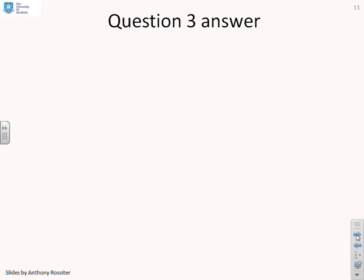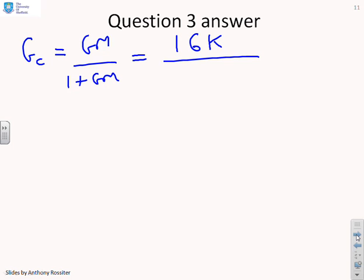First then, let's write down what the closed loop transfer function is. So gc, which will be gm over 1 plus gm, can be rearranged to 16k over s plus 48 plus 16k. And let's remind ourselves what we wanted. We wanted the time constant to be less than 0.01.